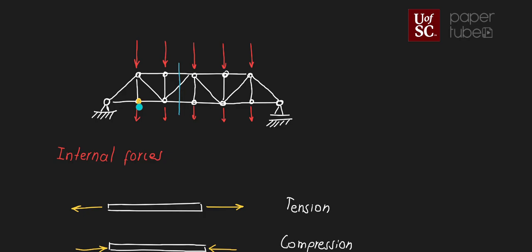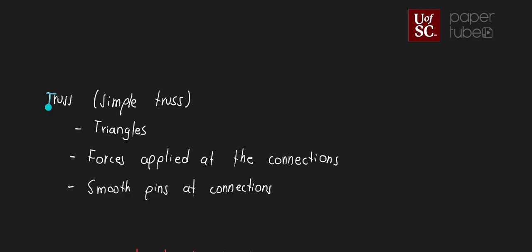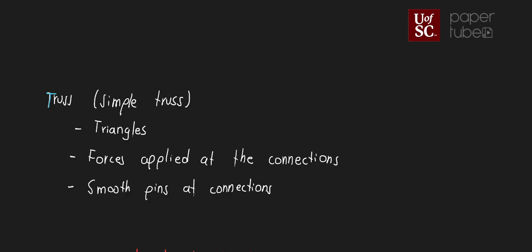We'll look at more videos about those two methods later. The important part here is to remember what a simple truss is and its three main assumptions: it's made of triangles, all forces are applied at the connections, and the connections are smooth pins. Also remember that the internal forces on those elements can only be tension or compression.